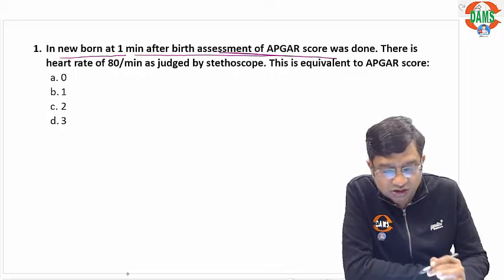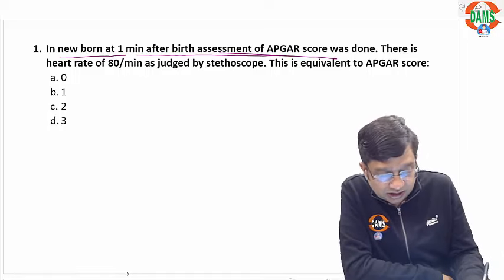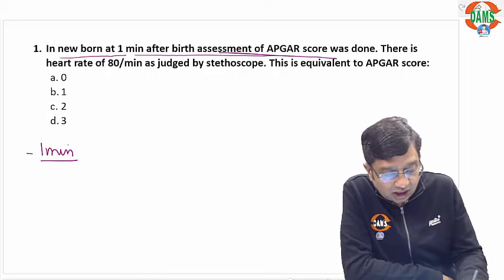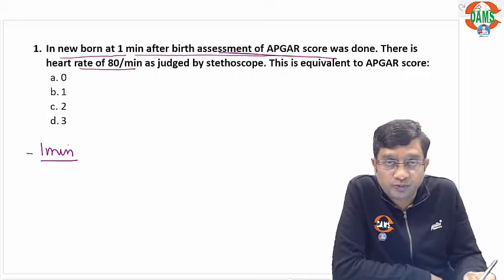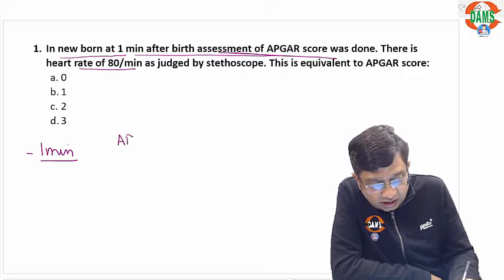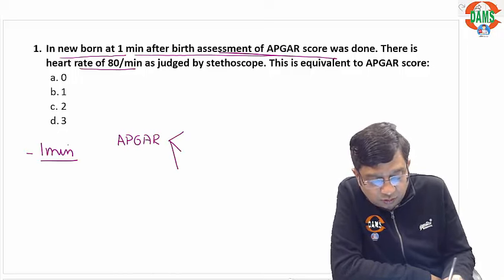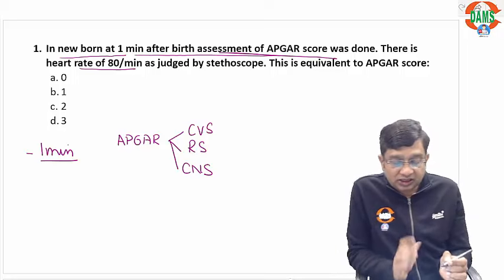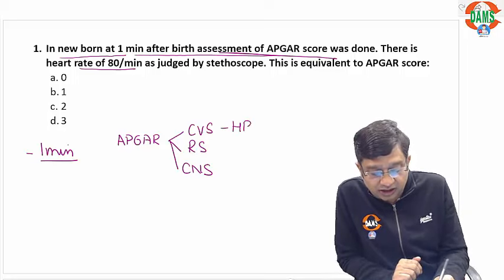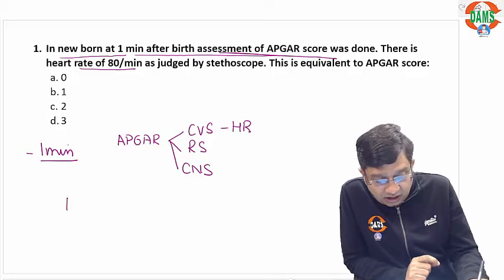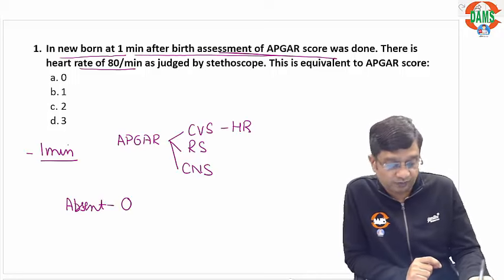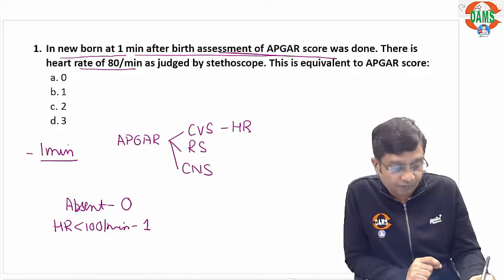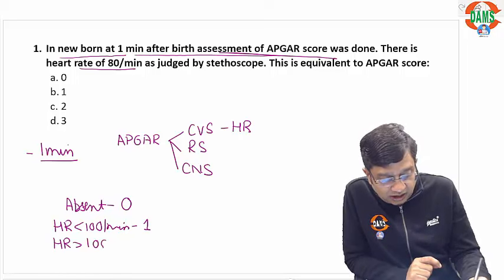In the first question, a newborn at one minute after birth has an assessment of APGAR score done. You should remember that APGAR score assessment is not done at birth — the first assessment is done at one minute after birth. There is a heart rate of 80 per minute, measured by stethoscope. If the heart rate is absent, you give a score of 0. If the heart rate is less than 100 per minute, you give a score of 1.